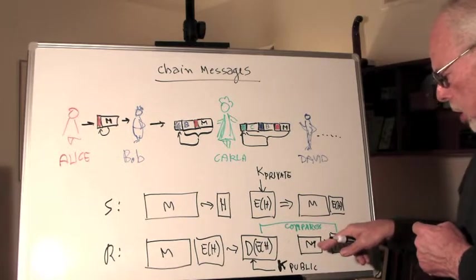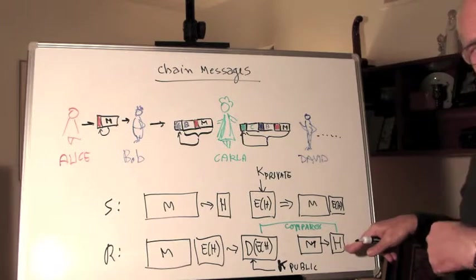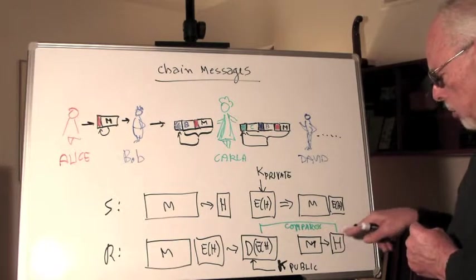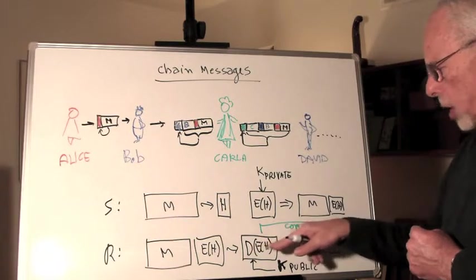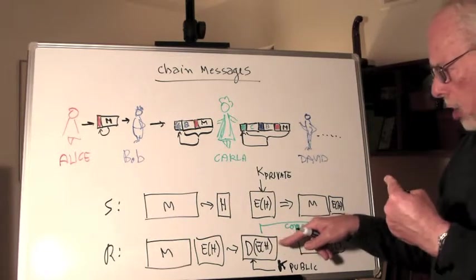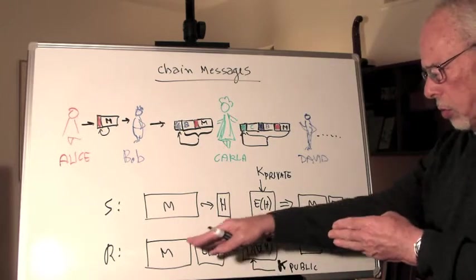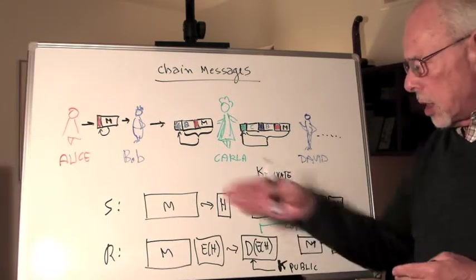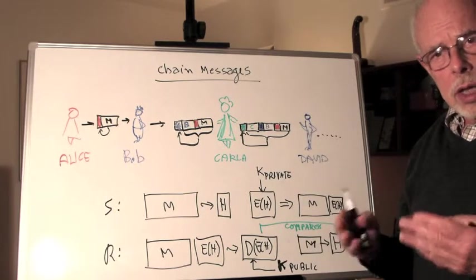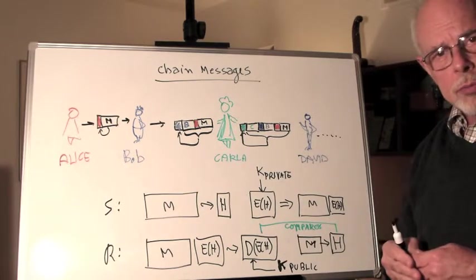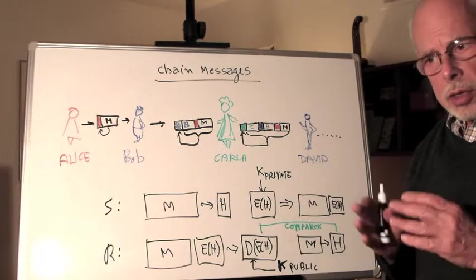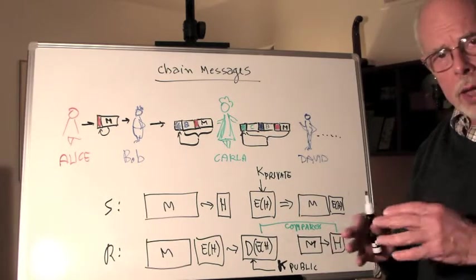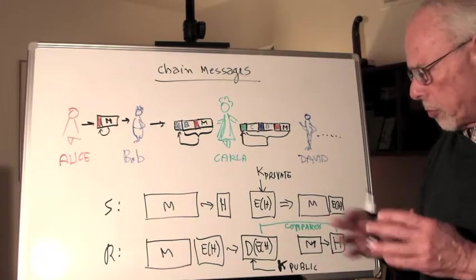And in parallel, he takes or he or she takes the message and hashes the message. And the last thing is to compare the result of the hash to the decrypted hash that was attached to the message. If they agree, then the assumption is that the sender is the author of the message. And the message has the integrity that's expected. No hacker changed anything. That's the concept.